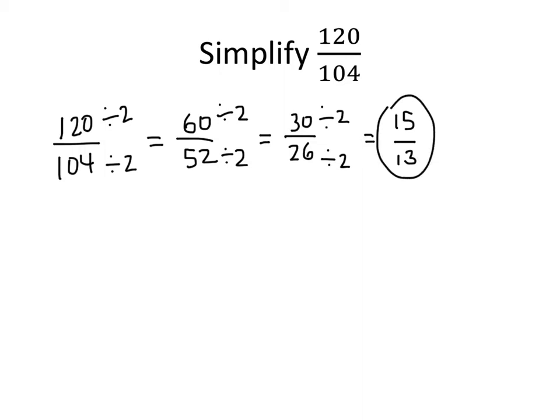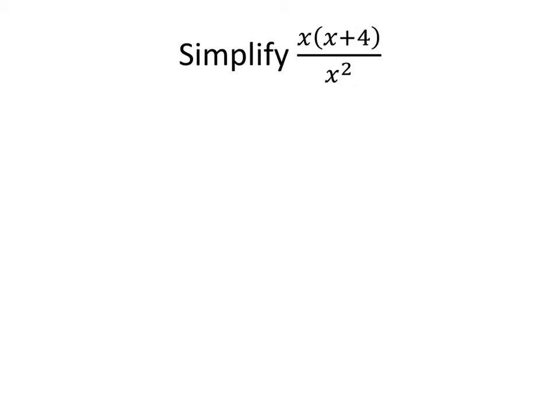So again, the key idea here is that when we simplify a fraction, what we don't want to do is simply start crossing things out that look the same. What we want to do is divide top and bottom by the same number. And that principle applies even if we have an algebraic fraction. After all, variables represent numbers. So if we see the same expression on the top or bottom of our fraction, we can't just cross them out because they look the same — instead, what we have to do is divide top and bottom by the same number.